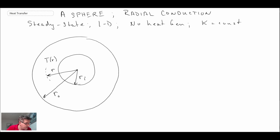And temperatures, those are the boundary conditions we're going to have. Let's say that we know Ti and we know To. All right, so that's the information we have.